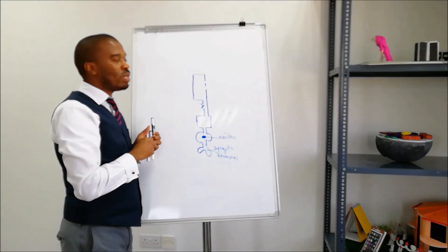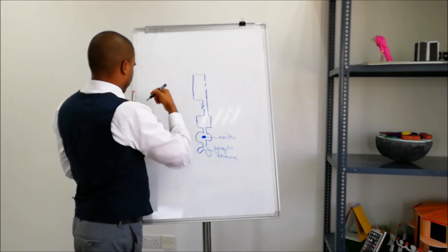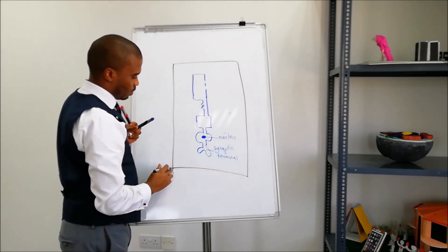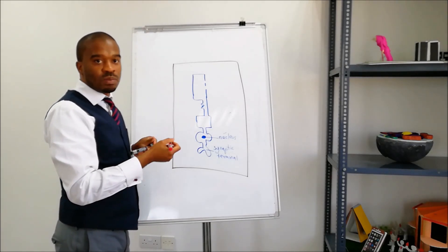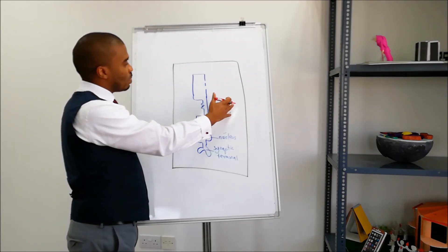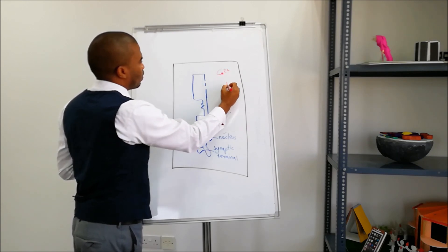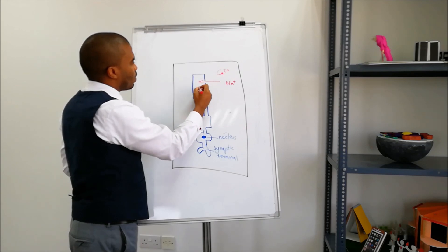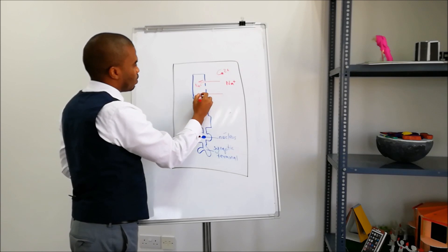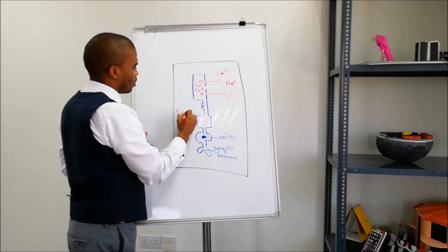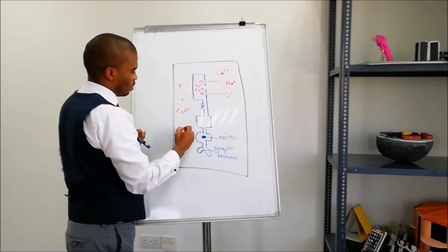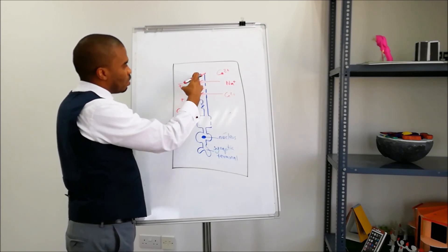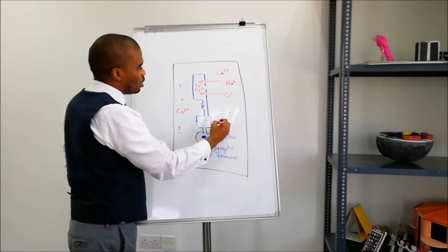Let's surround this cell with an extracellular fluid. Now let's include ions inside of the cell and outside of the cell. The cell membrane allows ions to go inside of the cell. The ions go inside of the cell from the surrounding extracellular fluid, and ions from the inside of the cell go back into the extracellular fluid.